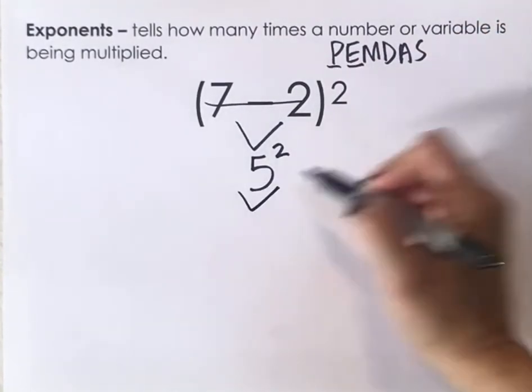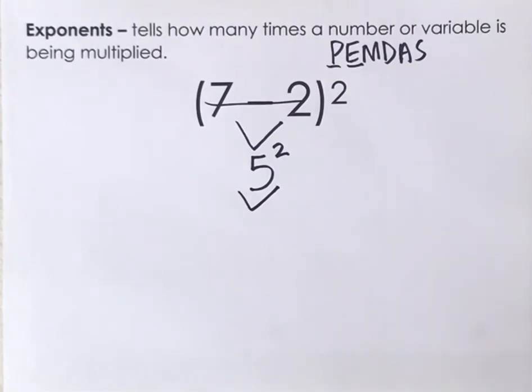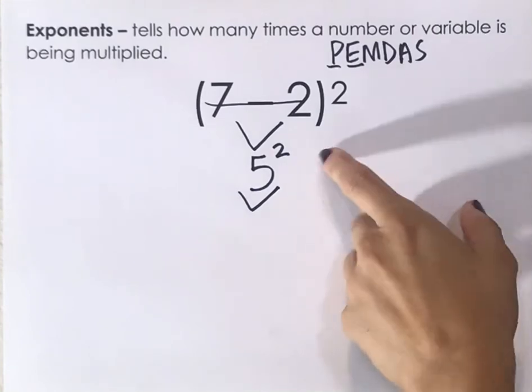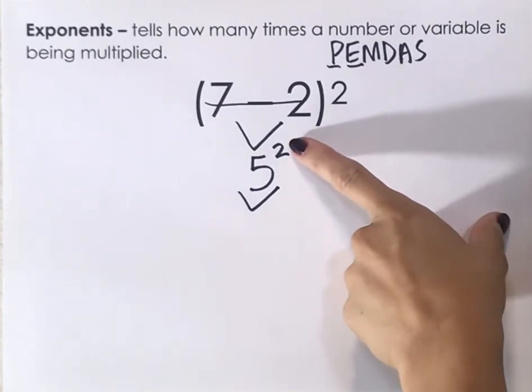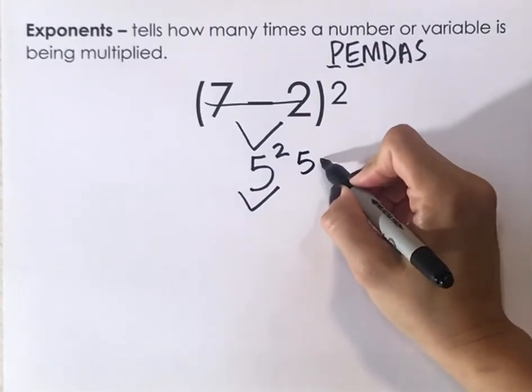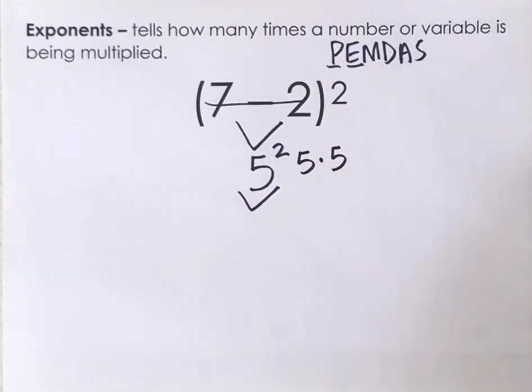So we're going to then solve that exponent. And remember, exponents means I'm going to be solving it in the way that it says I'm going to be multiplying 5 two times. So this means 5 times 5,